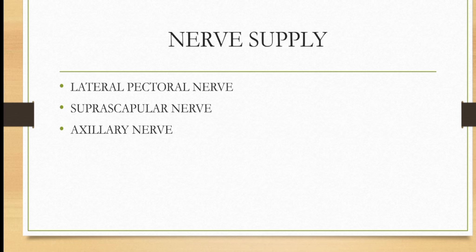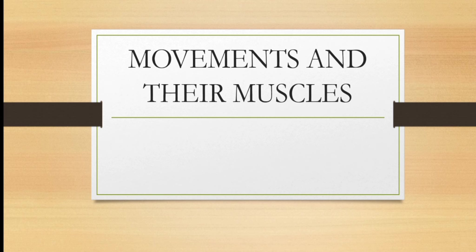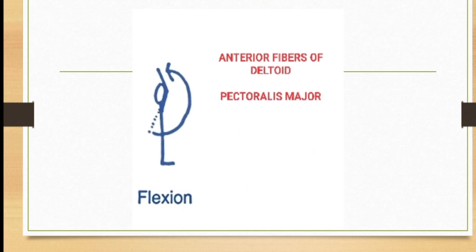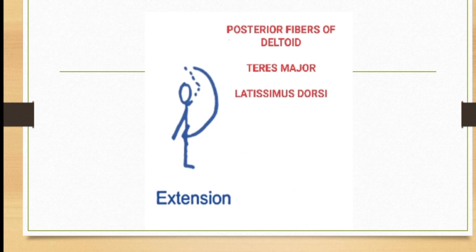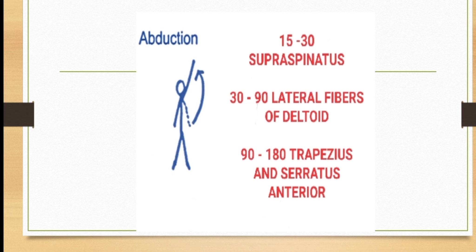We will now discuss the movements possible at the shoulder joint and the muscles responsible. Shoulder flexion is performed by the anterior fibers of the deltoid and pectoralis major. Extension is done by the posterior fibers of the deltoid, teres major, and latissimus dorsi. The first 15 to 30 degrees of abduction is done by the supraspinatus, 30 to 90 degrees by the lateral fibers of the deltoid, and the remaining 90 to 180 degrees by the trapezius and serratus anterior.